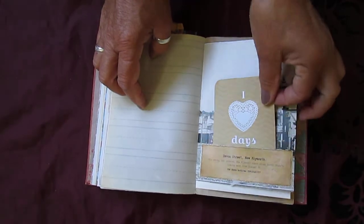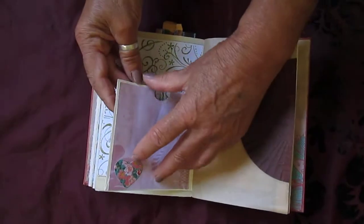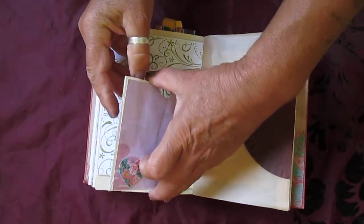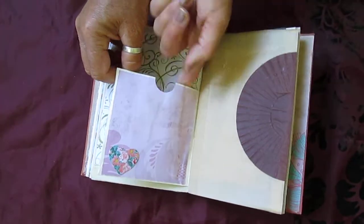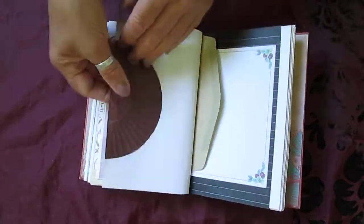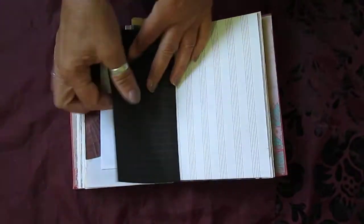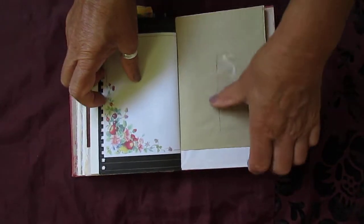There's another little pocket. Here's another pocket here to put some goodies in. There's a tuck spot in there. There's lots and lots of places for writing for you journaling.